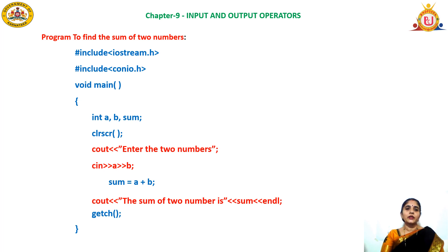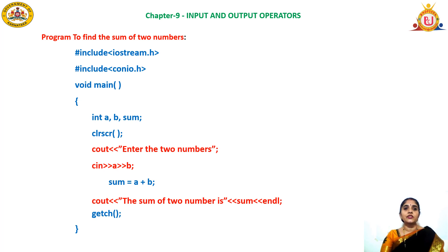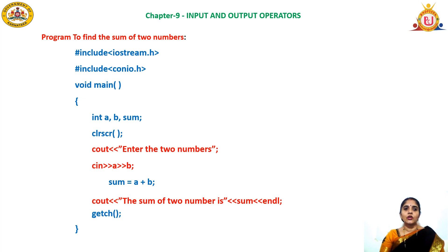For processing, write sum = a + b; Then for output: cout << "The sum of two numbers is" << sum << endl; End the program with getch() and close the bracket with semicolon. This complete program reads two integers from the keyboard, computes their sum, and displays the result.